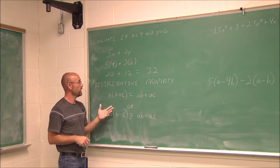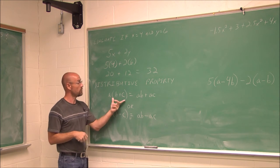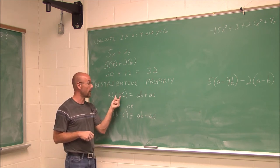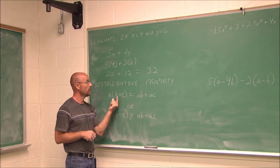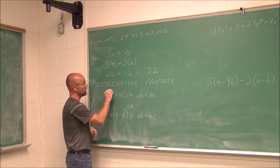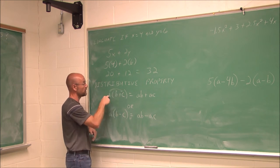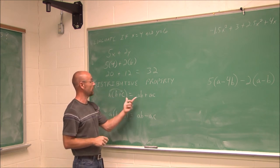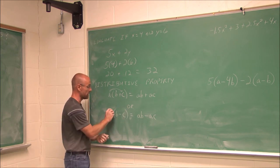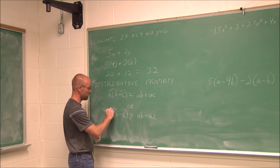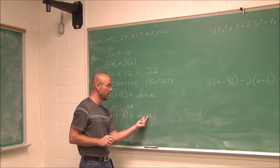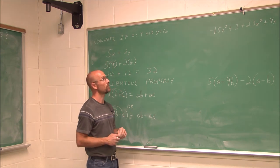Sometimes we'll be working with variables and want to simplify an expression that has parentheses. Order of operations says deal with parentheses first, but if I don't know the values inside I can't do the math. However, I can use the distributive property to eliminate them if there's multiplication adjacent. That is: a times (b + c) equals a times b plus a times c. I distribute the multiplication to each value within. It also applies to subtraction: a times (b − c) equals ab minus ac — that negative belongs to that term.